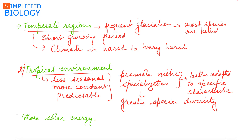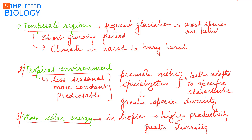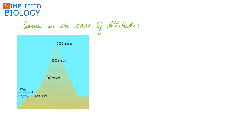The third hypothesis is the presence of more solar energy in the tropical region. More solar energy means higher productivity, which may indirectly lead to greater diversity. This is seen across a wide variety of taxonomic groups like ants, birds, butterflies, and moths. The same pattern can also be seen in the case of altitude.